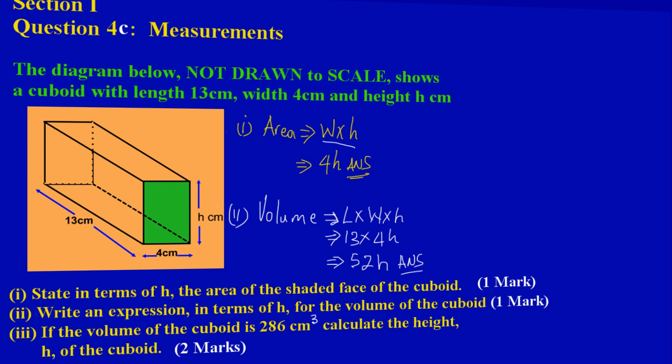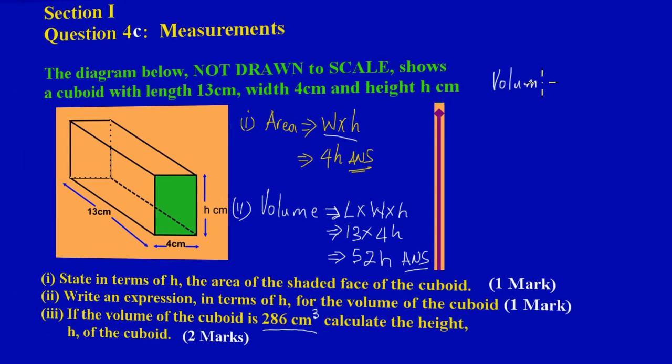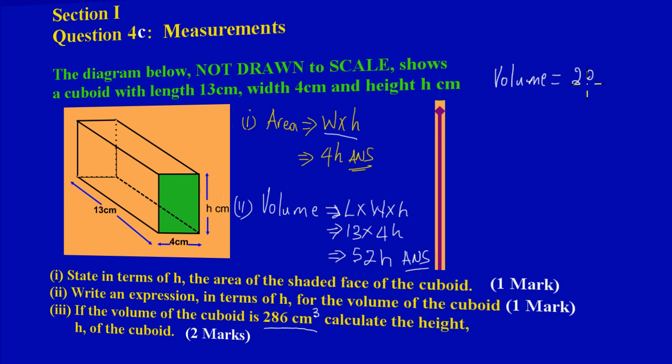286 centimeters cubed, calculate the height h of the cuboid, and that's another easy two marks. Quickly, let's just get into that my friends. If they are asking us to find the height of the cuboid and they gave us this value for the volume, the volume is 286 centimeters cubed. Okay, so let's just make some quick notes. They gave us the volume, they said that volume is equal to 286 centimeters cubed.